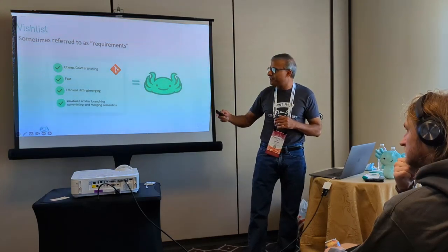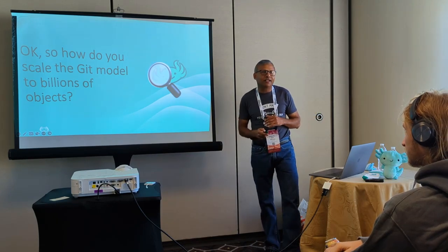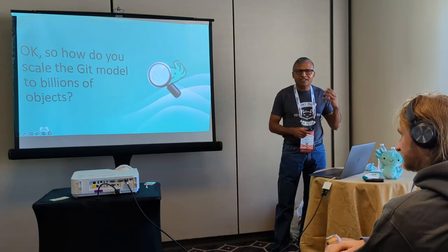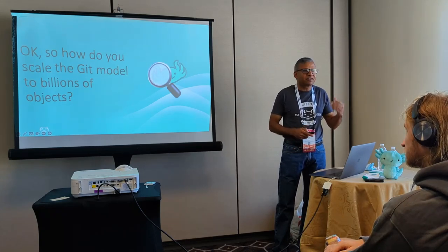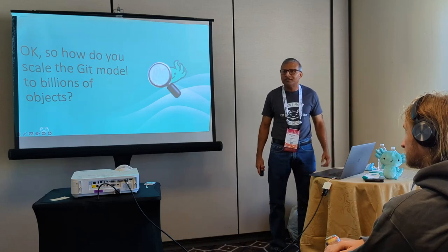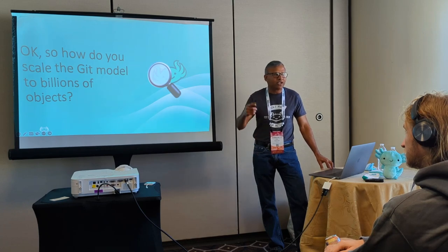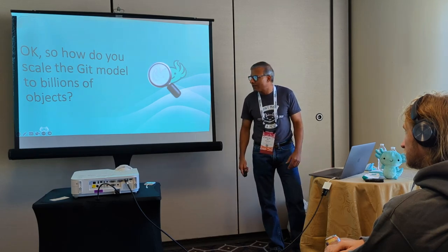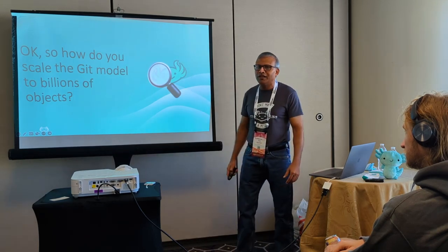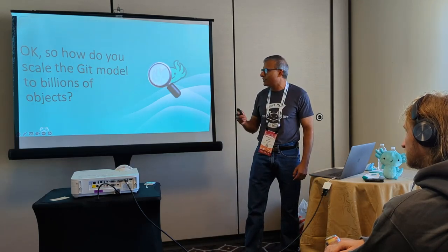The challenge was how to scale Git to billions of objects. Git is normally built for human scale — maybe a thousand commits, a hundred thousand objects — not for huge volumes of data. For example, Delta Lake creates lots of small Parquet files, so how do you handle billions of objects, not just 100,000 or 200,000 like Git can handle?